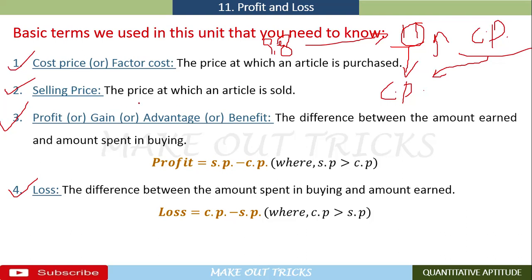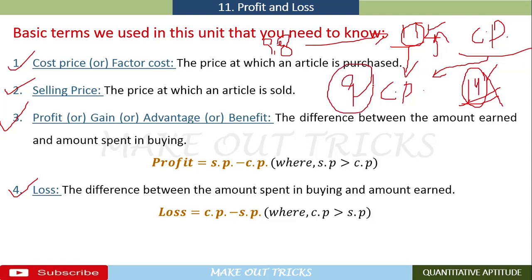The selling price is the price at which an article is sold. If I bought something for 11 rupees and sold it for 14 rupees, the selling price is 14. If I sold it for 9 rupees, the selling price is 9 — regardless of profit or loss.